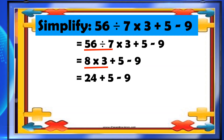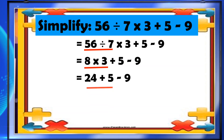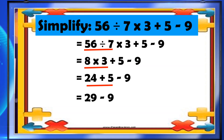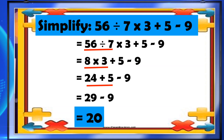Then, followed by addition: 24 plus 5 equals 29. Now we have 29 minus 9. And finally, subtract. Our answer is 20.